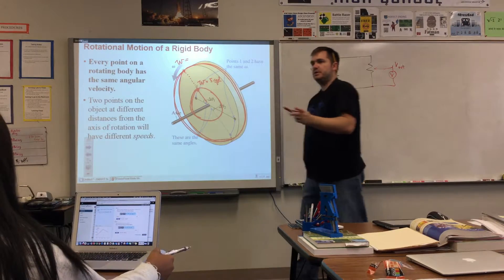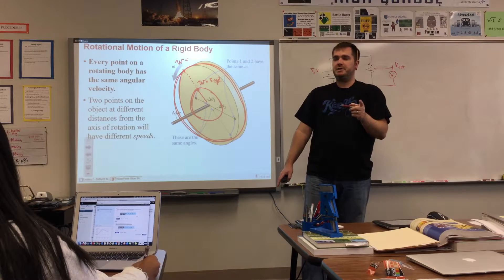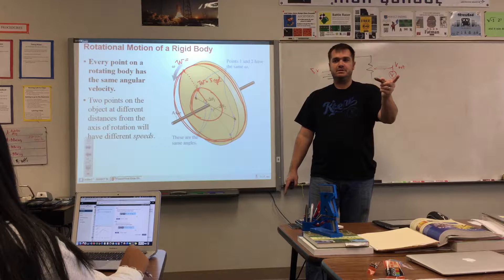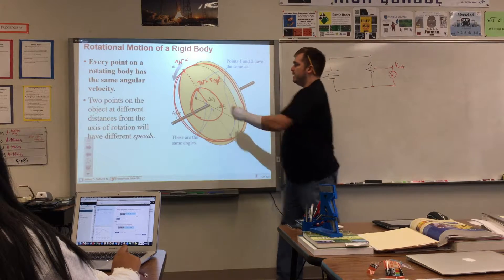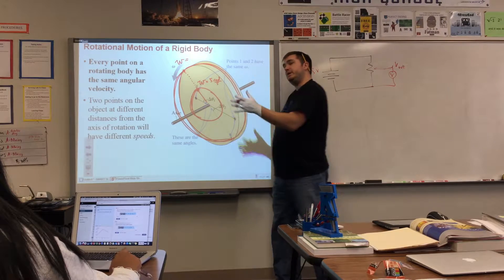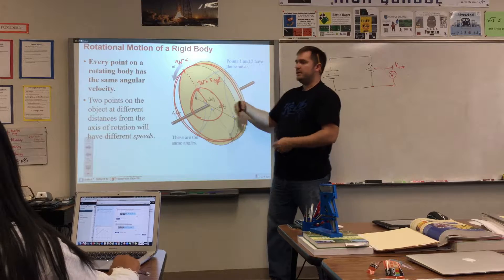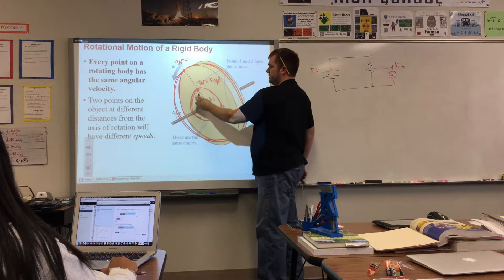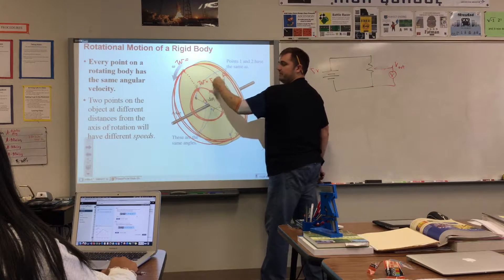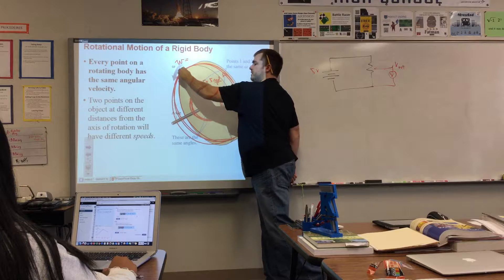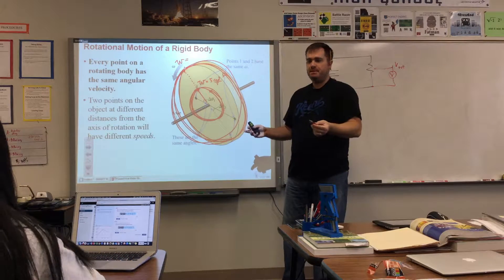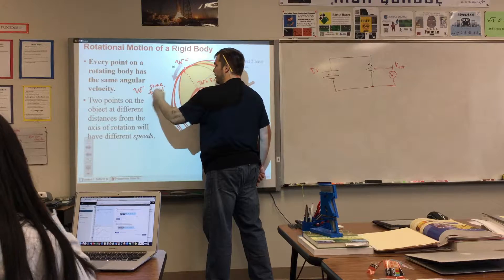If a point near the center has an angular velocity of five radians per second, what's the omega for a point on the outer edge? It's equal — both have five radians per second. Think of it as one revolution per second: the inner point and outer point both complete one revolution per second. Angular velocity is the same for all points on the wheel.